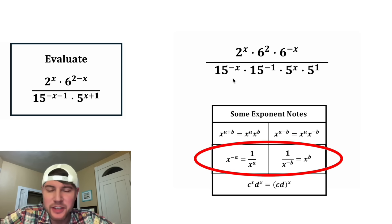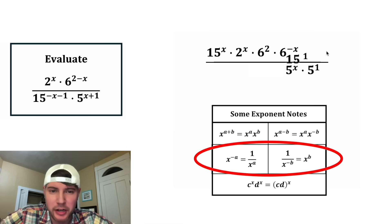So we can do the same thing here. This 15 to the negative x power on bottom can be brought up, and it'll be 15 to the positive x. And this 15 to the negative 1 on bottom can be brought on top to be 15 to the positive 1. And then this 6 to the negative x on top can be brought on bottom to be 6 to the positive x.